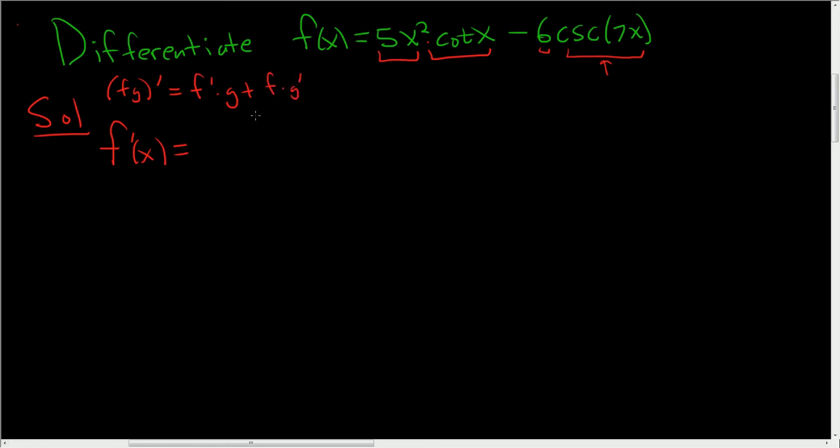Most books don't do it this way. All right, so the derivative of the first piece is 10x, right, it's easy, times the second piece, which is cotangent x plus the first, which is 5x squared times the derivative of the second piece. And the derivative of cotangent is negative cosecant squared x.